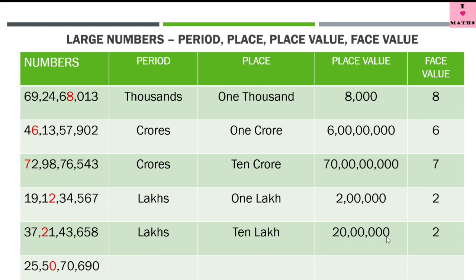Lakh is the period, 10 lakh is the place, place value is 20 lakh, and 2 is the face value. Children, please note — whether 2 is at 1 lakh place or at 10 lakh place, its face value will remain the same. It's just like your face — no matter whether you are in school, at home, or in the market, your face will look the same. So wherever digit 2 is, its face value will always be 2 itself.